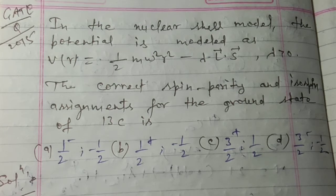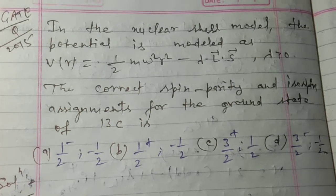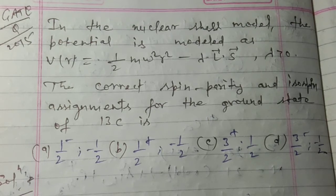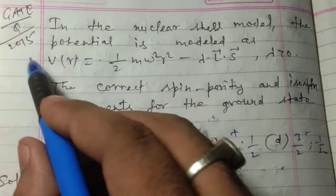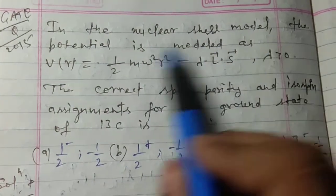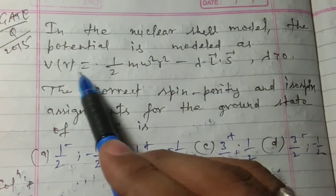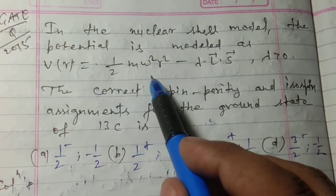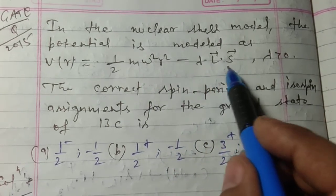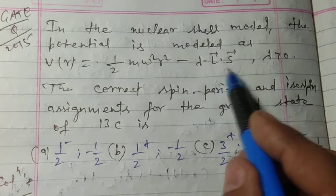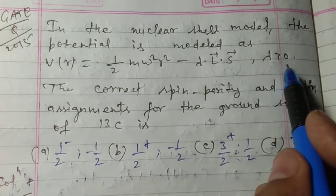Hello everyone, welcome to my channel Learning Institute. Today I am going to discuss a problem which was asked in 2015 GATE. In the nuclear shell model, the potential is modeled as V(r) = 1/2 m ω² r² - λ L⃗·S⃗ for λ greater than zero.